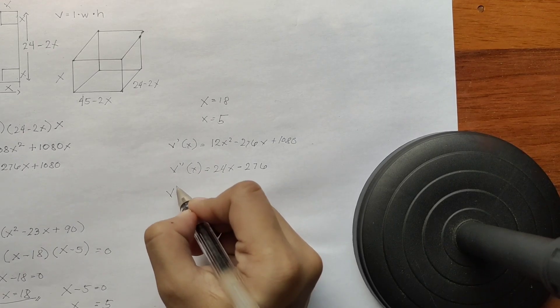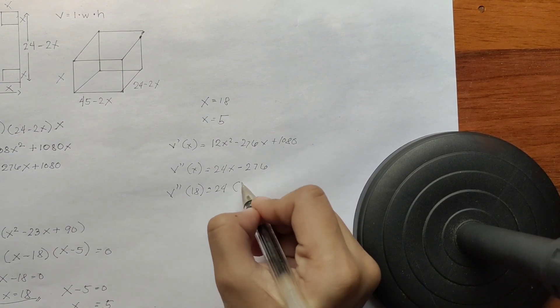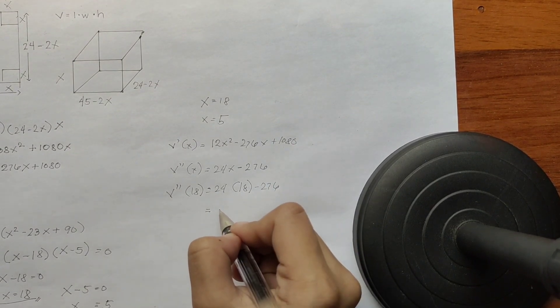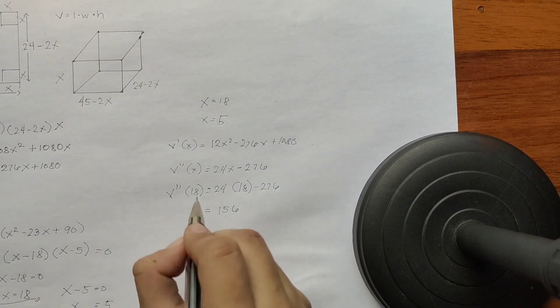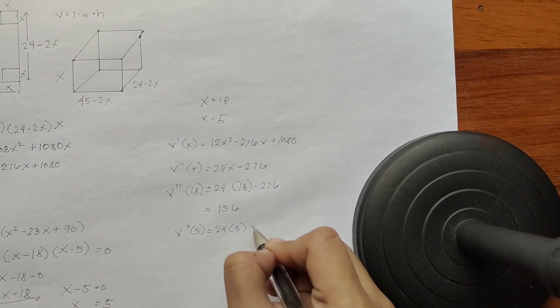The 18 first. Then it's 18 minus 276. This is 156. And let's try the x plus 5. That's 5.